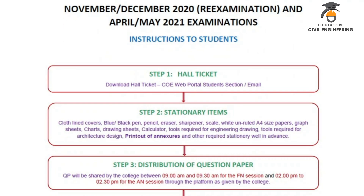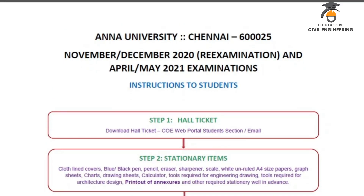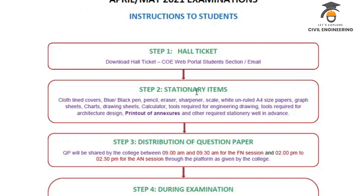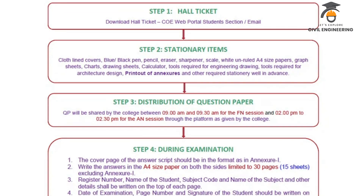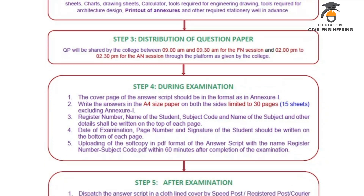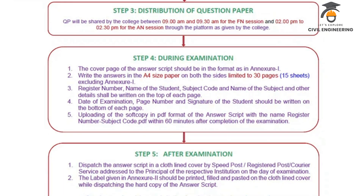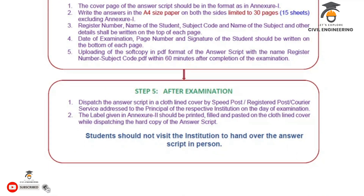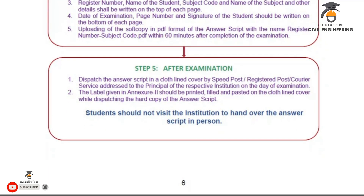This is the flow chart. First, download the hall ticket from the portal, then prepare stationery items. The distribution of the question paper is from 9:00 to 9:30. Annexure 1 is followed by Annexure 2.